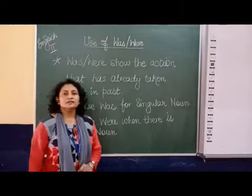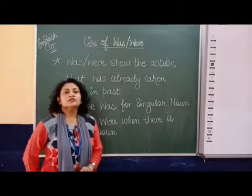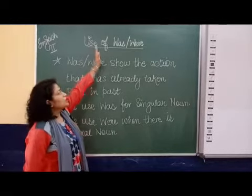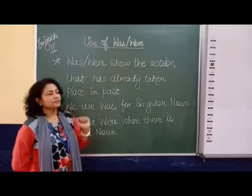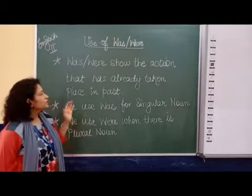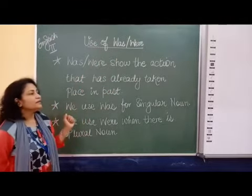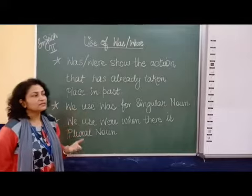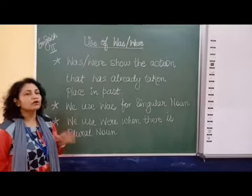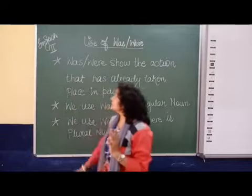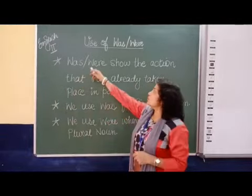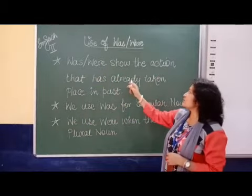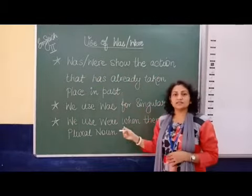Good morning children. Today we will learn the use of was and were. This is used when the action is already done, that means we are talking about past tense. Was and were show the action that has already taken place in the past.